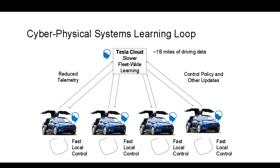Moreover, every one of these vehicles is connected to the Tesla cloud, which has collected upwards of a billion miles of driving data so far, much of it while Tesla's autopilot functionalities are engaged. Machine learning and other forms of learning are implemented in the cloud, and then updates to the control systems are downloaded back into the vehicles to improve their functionality. In a clear sense, this is a learning cyber physical system.